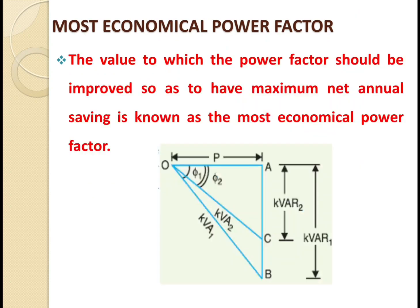Now we will go for the Most Economical Power Factor. The value to which the power factor should be improved so as to have maximum net annual saving is known as the Most Economical Power Factor. If a consumer improves the power factor, there is a reduction in maximum KVA demand, and hence an annual saving over the maximum demand charges. By improving the power factor, the maximum demand at the consumer side decreases, resulting in annual savings in maximum demand charges.